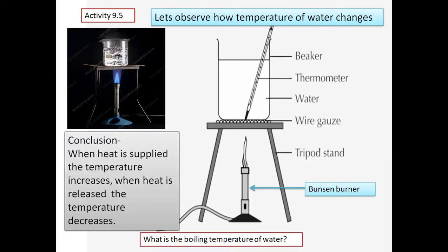Activity 9.5: observe how the temperature of water changes. You need a beaker of water, a thermometer, and a Bunsen burner or spirit lamp. Set up the apparatus, light the burner, and observe the temperature change on the thermometer. Conclusion: when heat is supplied, temperature increases; when heat is released, temperature decreases. The boiling temperature of water is 100 degrees Celsius.